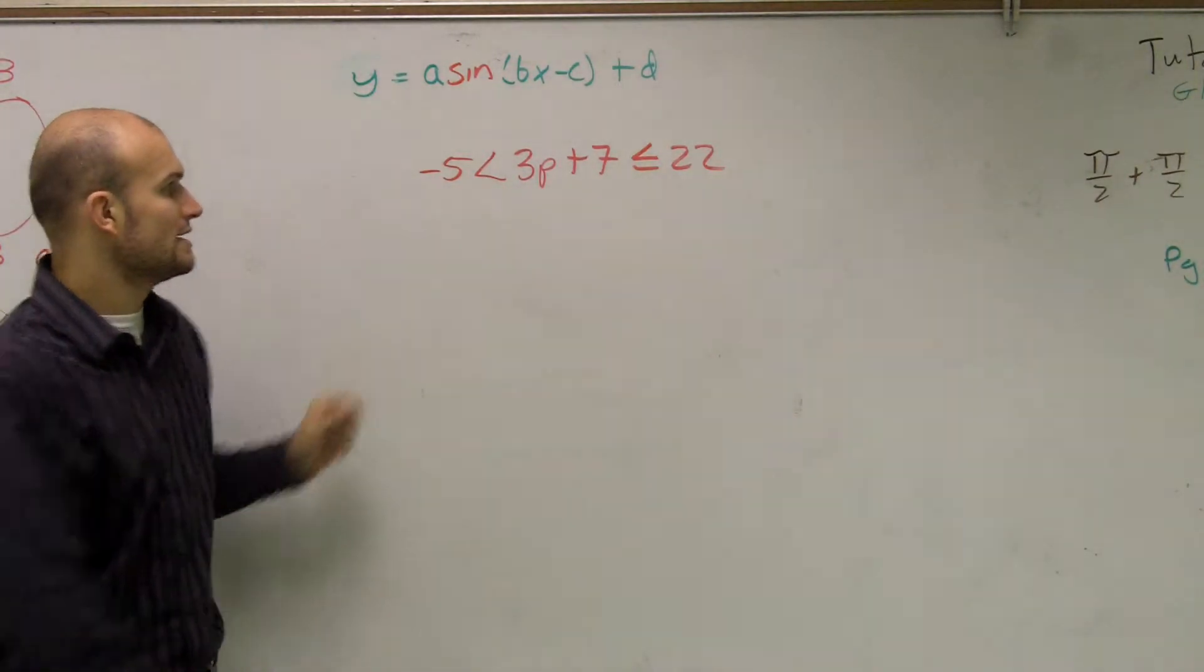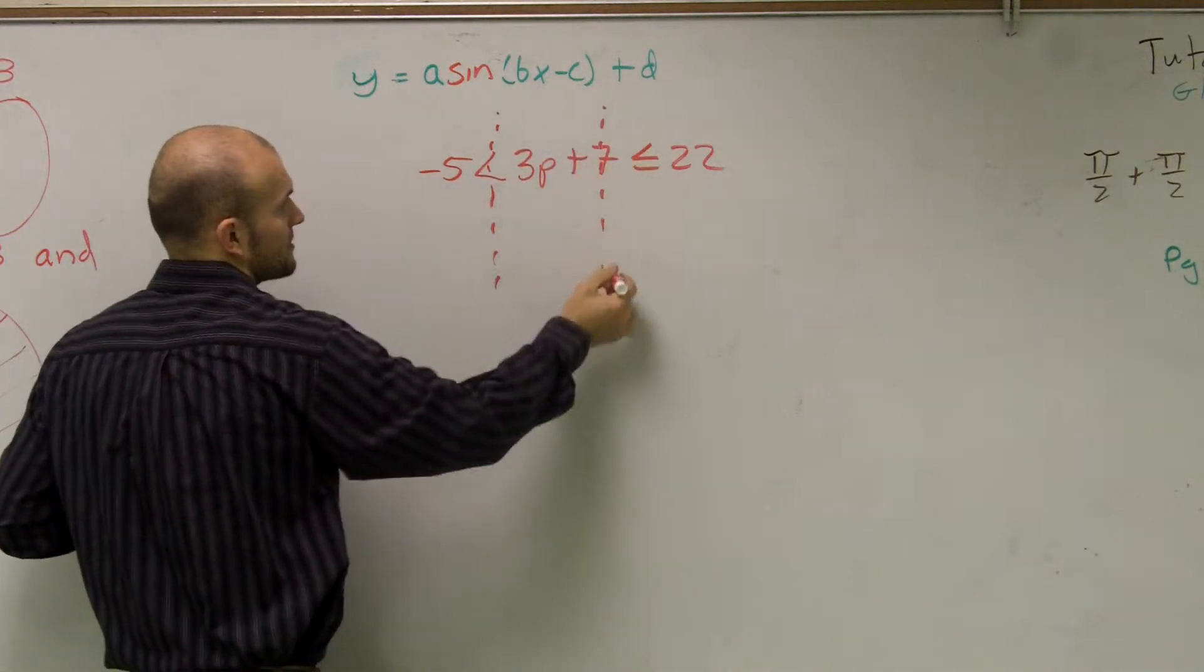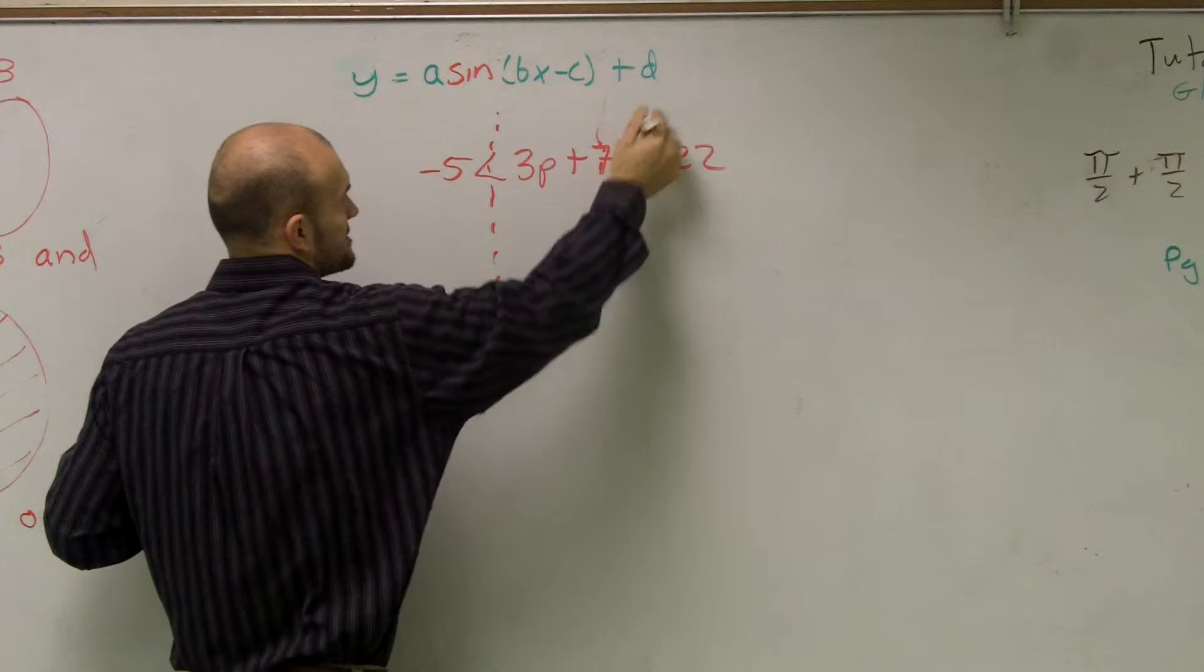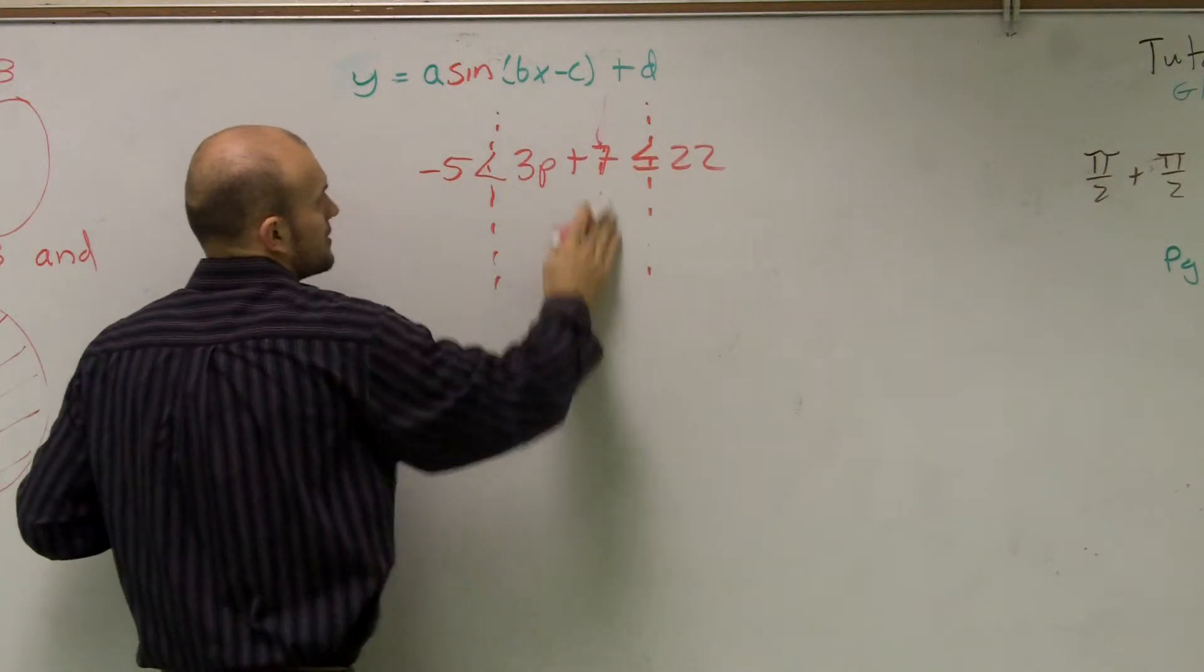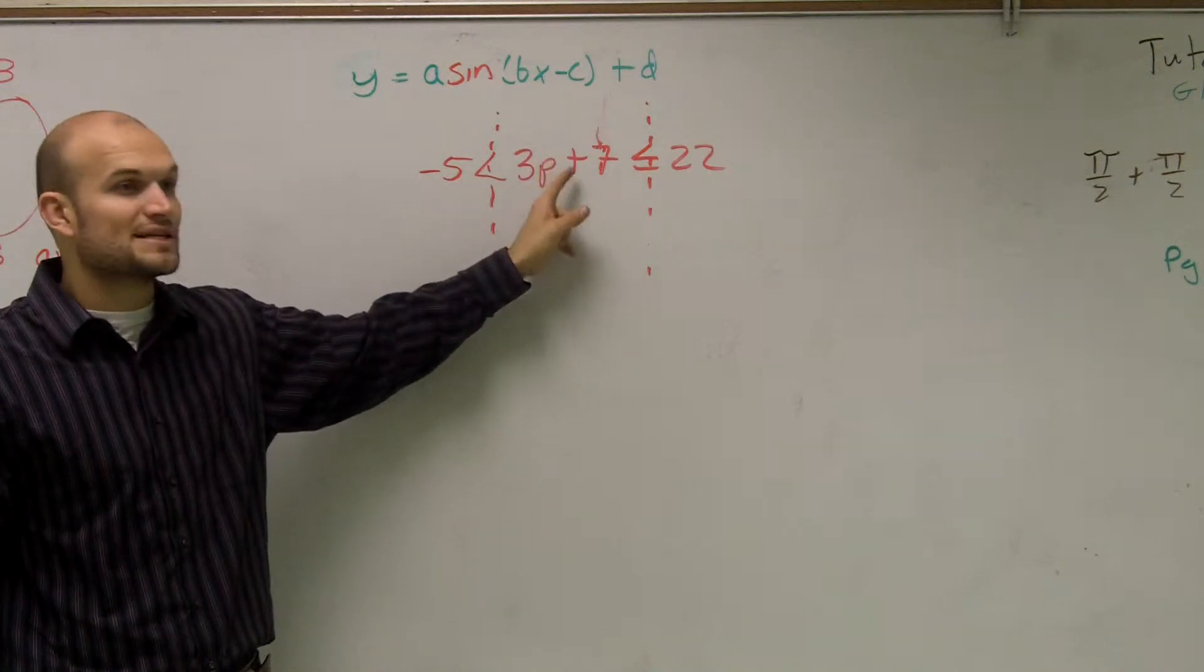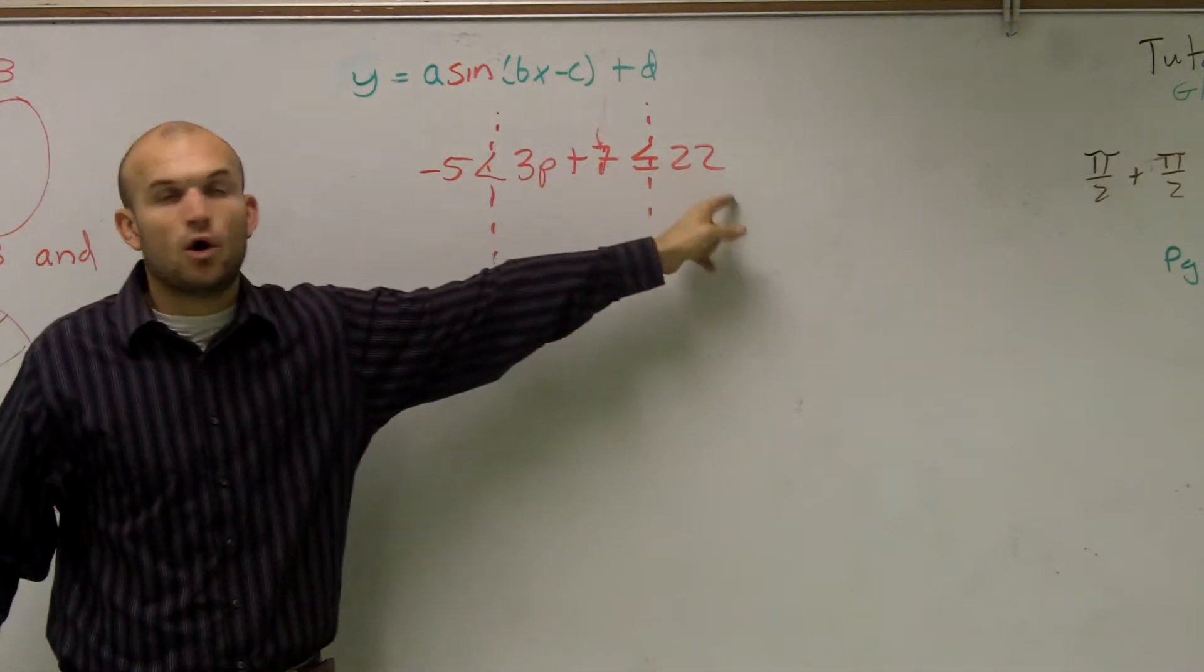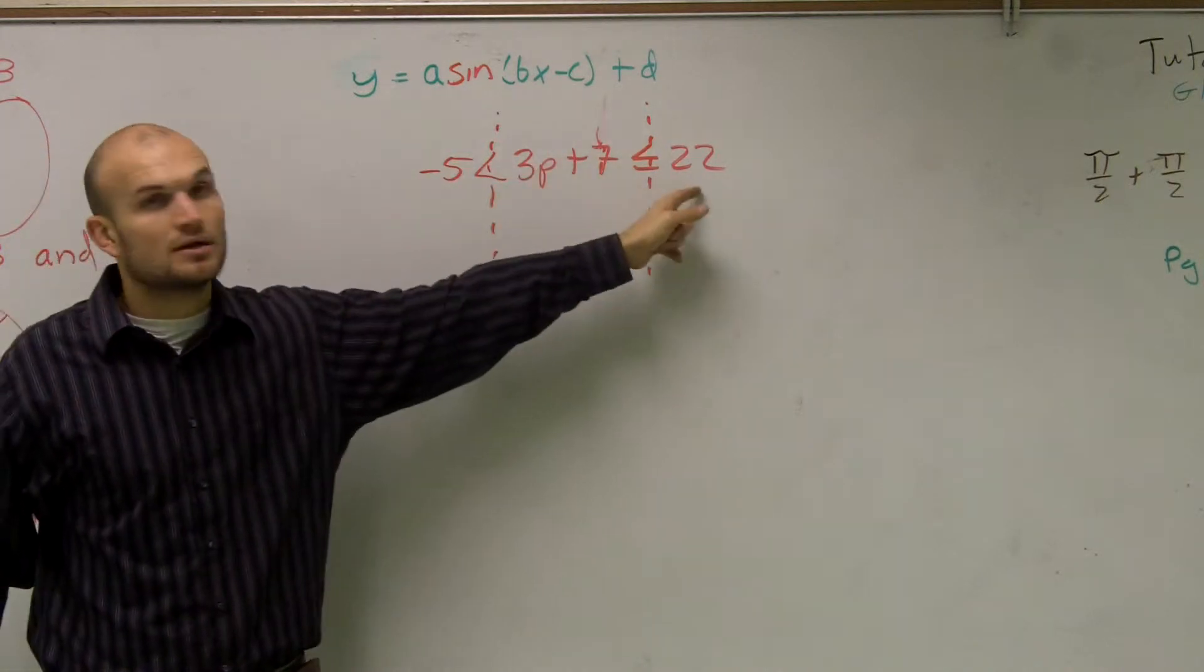Well, here in inequality you can kind of say you have three equal parts. So whatever you do in the middle to get rid of, right, we don't want to solve for our variable. So what do we do in the middle? We have to do to both ends of our graph.